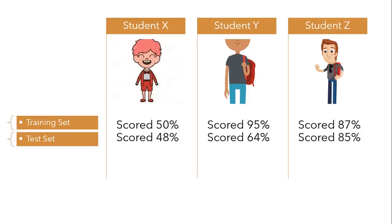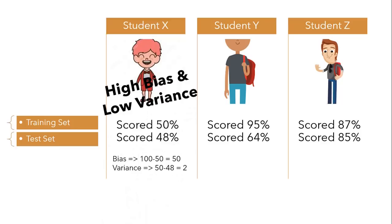By looking at student X's scorecard, on training data we are getting low marks — 50%. If I subtract from 100 we get an error of 50, which is very high, so the bias is high. For test data, accuracy on training minus accuracy on test is 50 minus 48 = 2, which is very low variance. When we have high bias and low variance, we can say our model is underfitting the data, as the model is not learning in any case — it always aims off the target but is consistent, as seen in student X's scorecard in both scenarios.